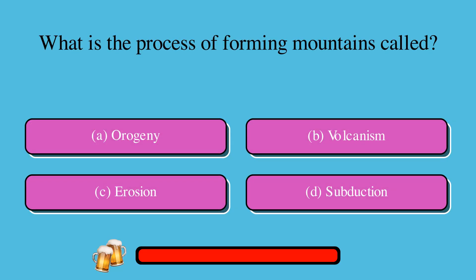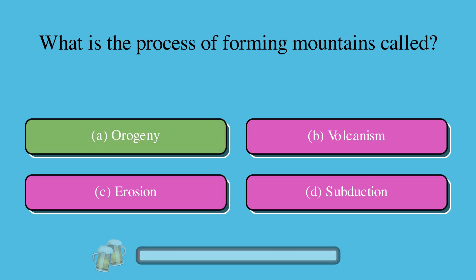What is the process of forming mountains called? A. Orogeny, or B. Volcanism, or C. Erosion, or D. Subduction? The correct answer is A. Orogeny.